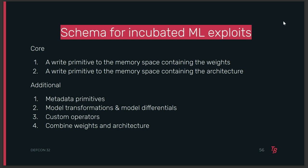I made this schema for incubated ML exploits as one piece of a more formal model of exploitation. If you want to pull off an incubated ML exploit, you want write primitives for the weights or the architecture. We've also seen some additional useful capabilities from the proof of concepts — you probably want read primitives as well. With the SafeTensors parser differential, you saw that access to the metadata could enable both kinds of attacks. And there's a lot of utility in exploiting model transformations and model differentials — you can construct exploits at different stages of the pipeline that exploit existing procedures. With ONNX, it also became obvious that you can use malicious custom ops in serialization formats, and potentially even in places like compiler dialects.